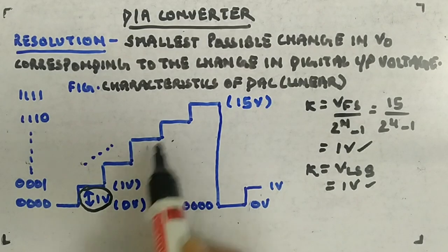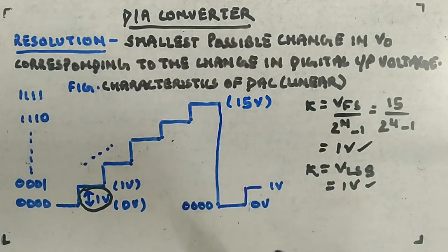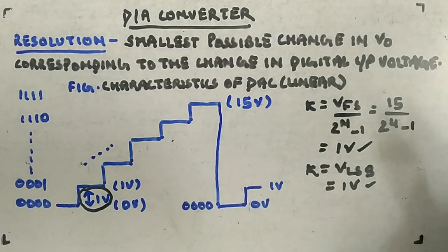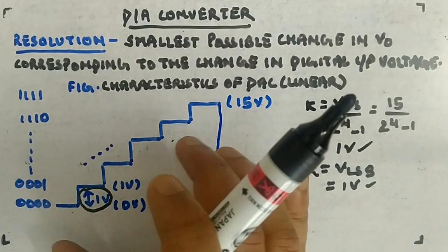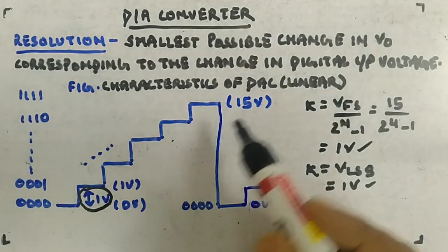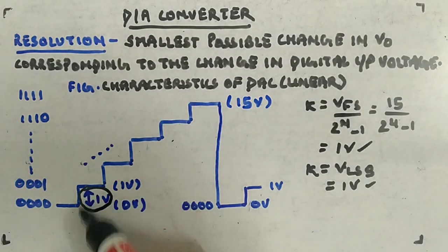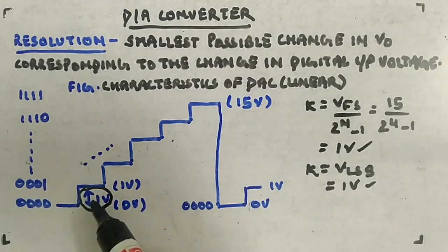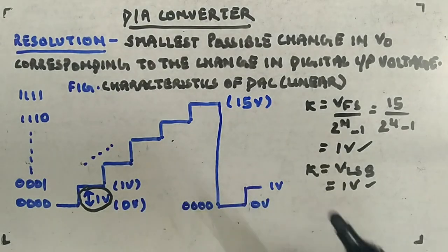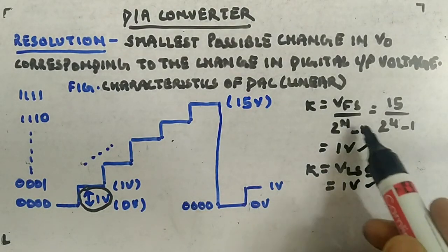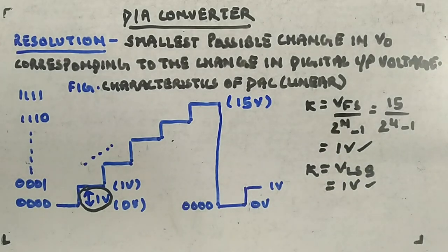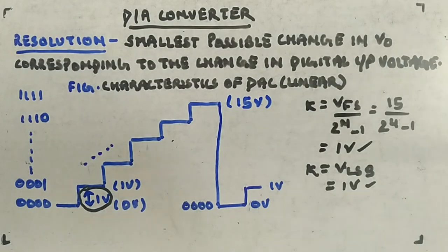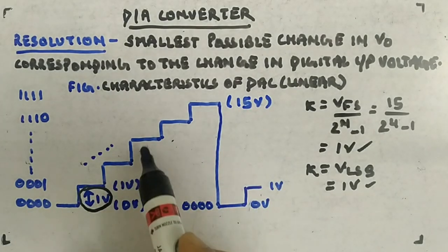Each step is 1 V, and at 1111 you reach 15 V. After that it wraps back to 0000 and starts again. Both methods of calculating resolution give 1 V: using full-scale voltage, Vfs/(2^n − 1) = 15/15 = 1 V; and using LSB voltage, the output for input 0001 is also 1 V. The DAC characteristic is linear with proportionality constant 1 V.